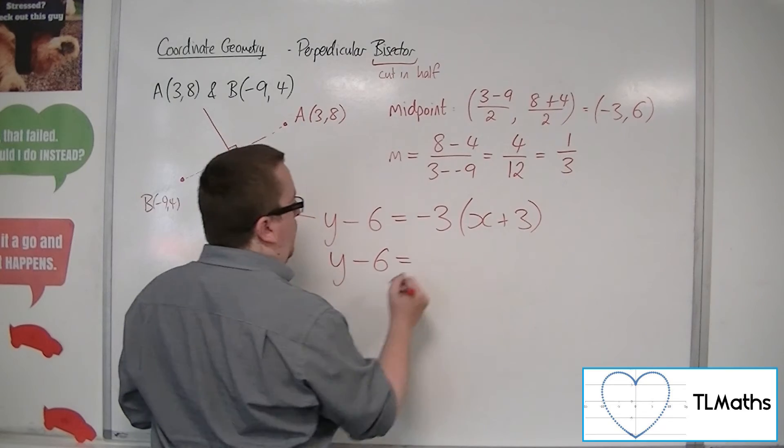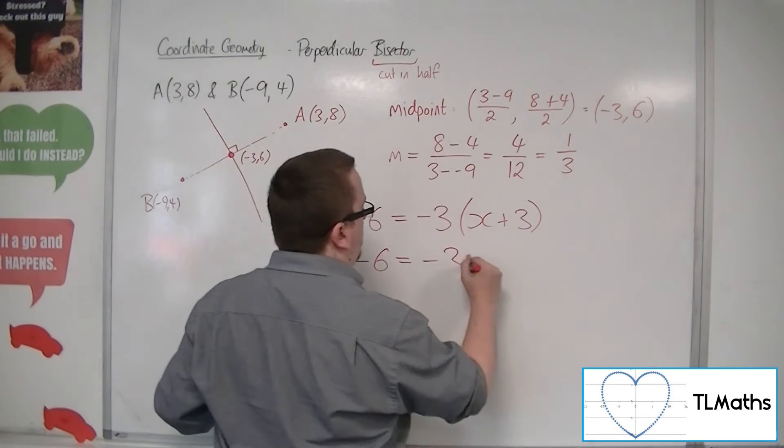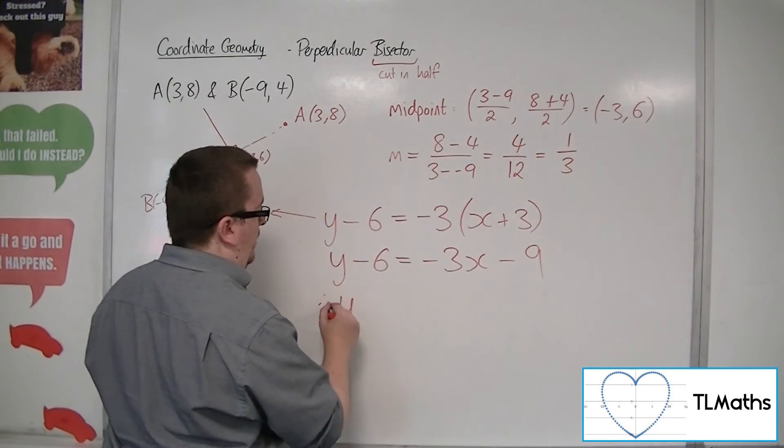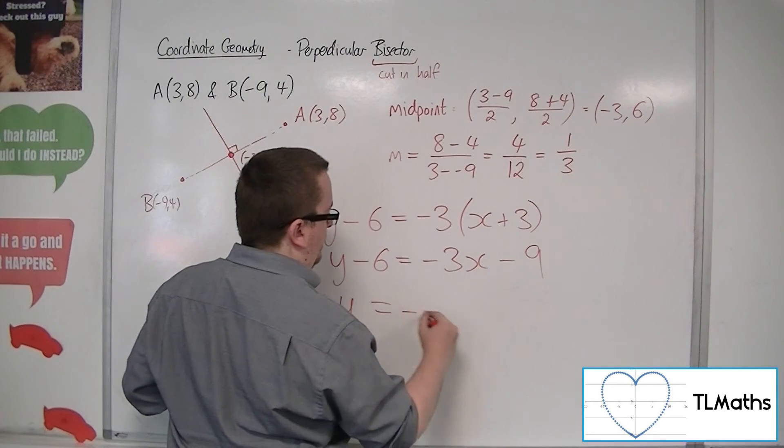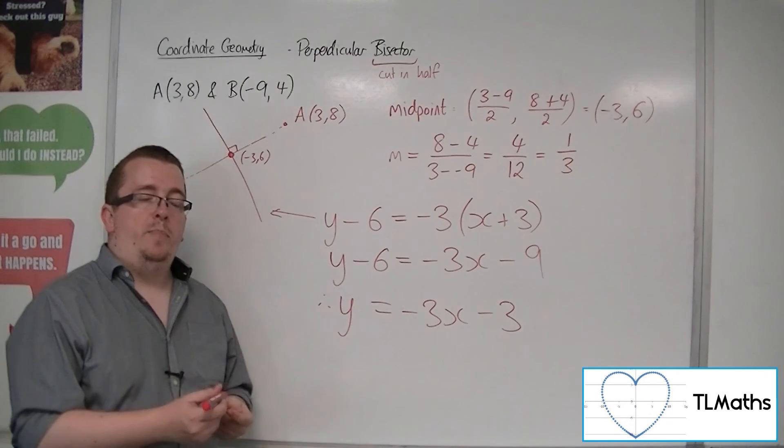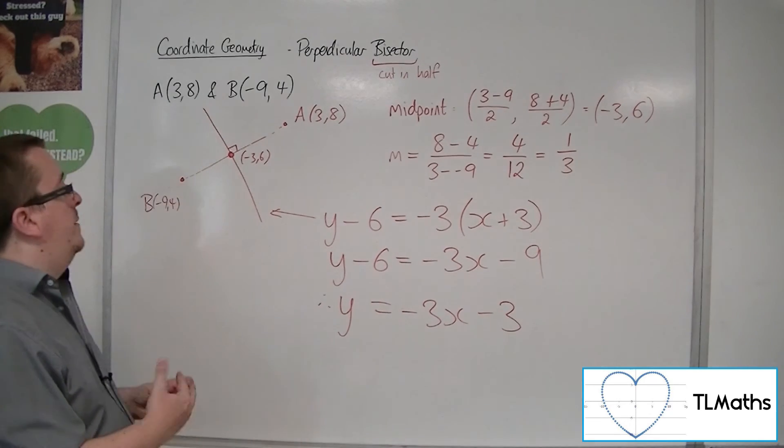So if I maintain the y minus 6 on the left-hand side, multiply through by the minus 3, then add the 6 to both sides, we have the equation of the perpendicular bisector of A and B.